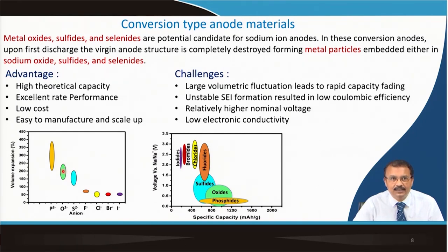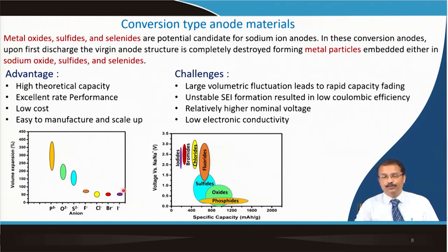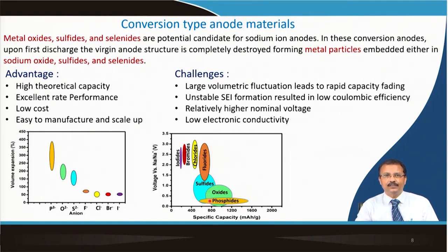Comparing various conversion materials — phosphates, oxides, sulfides, fluorides, chlorides, bromides, iodides — volume expansion is very large for some of them. Considering both voltage and volume expansion, one cannot use materials with very high voltage unless a 6-volt sodium cathode material is developed. Therefore, one must be satisfied with sulfides, phosphides, and oxides for conversion-type anodes for these obvious reasons.